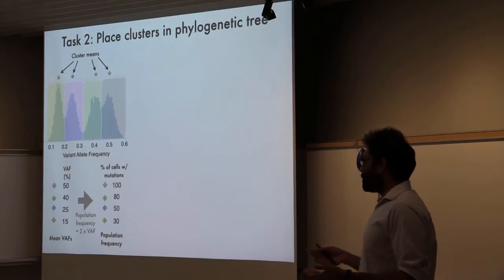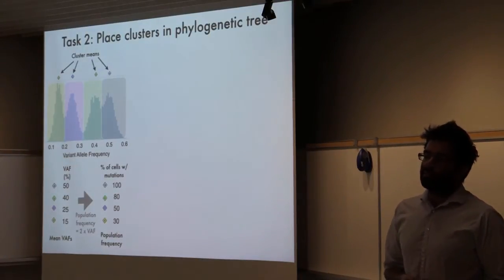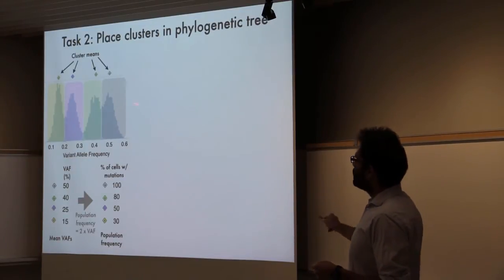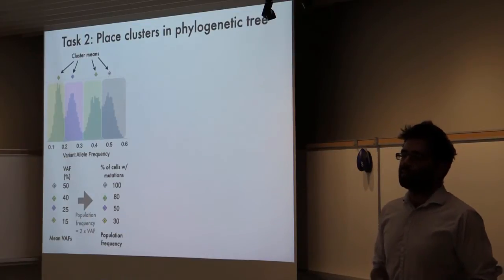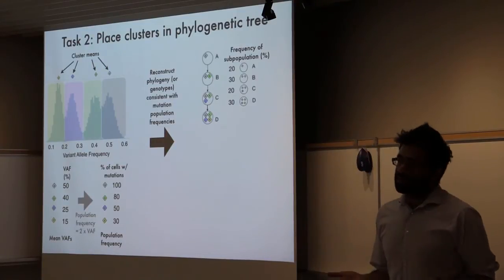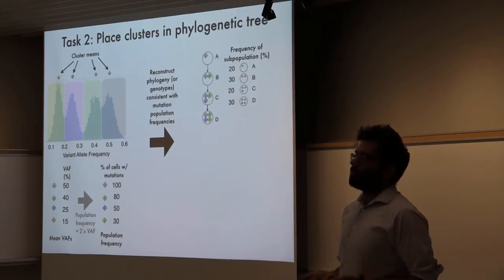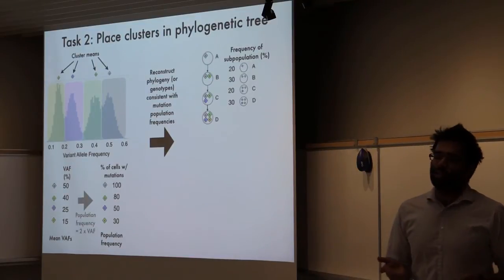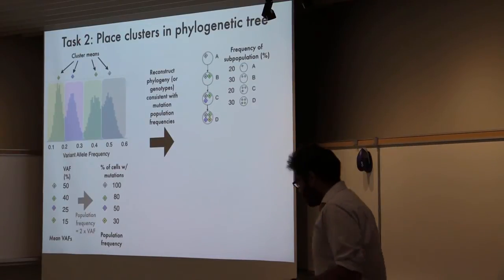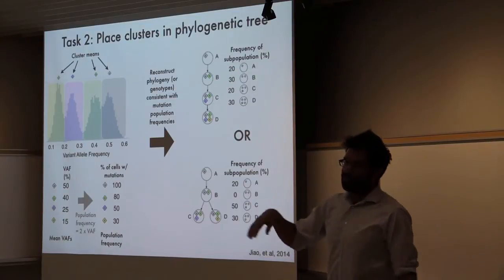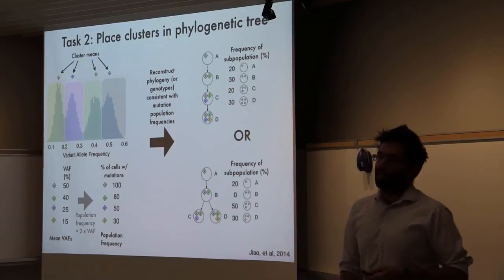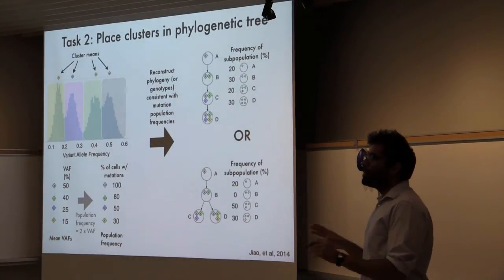If you assume there are no copy number changes, this is easy — you just multiply the VAF by two, and that gives you an estimate of the proportion of cells containing that mutation. So the central VAFs for the four clusters, multiplied by two, give the proportion of cells containing each mutation, and then we place them in a phylogenetic tree. Once you have that phylogenetic tree, you can figure out the genotypes for each subpopulation. Unfortunately, there are often multiple phylogenetic trees consistent with the same VAF data — this other phylogenetic tree has the same expected VAF as the linear phylogeny.